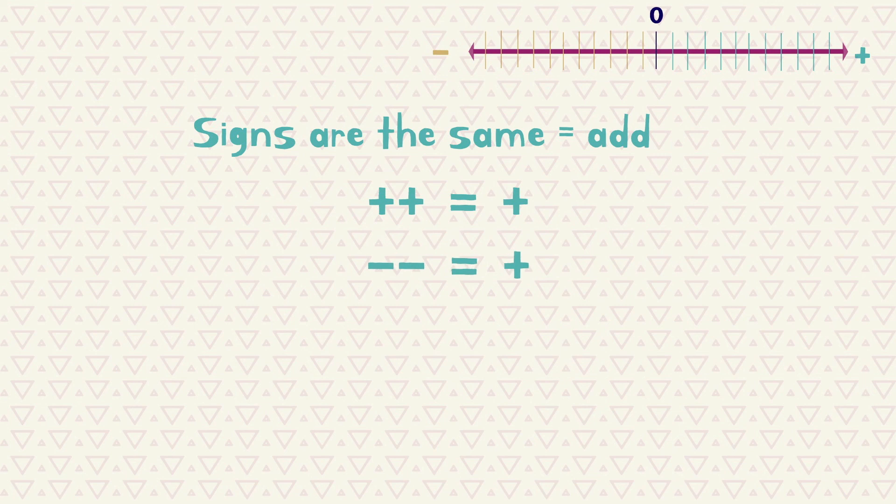So what have we learnt about adding and subtracting positive and negative numbers? When the signs next to each other are the same, we add. When the signs next to each other are different, we subtract.